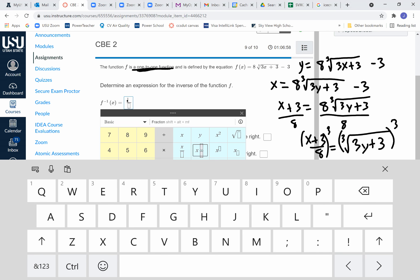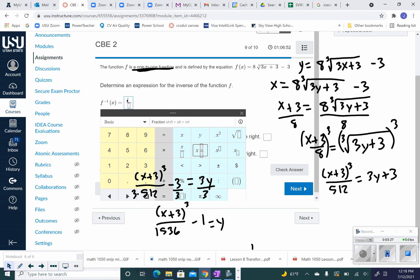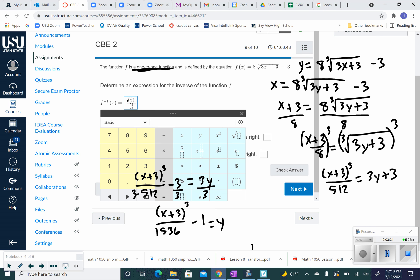Let's go back to here. So on top we have, grab my keyboard again, x plus 3 cubed over 1,536 minus 1, and that's the inverse.